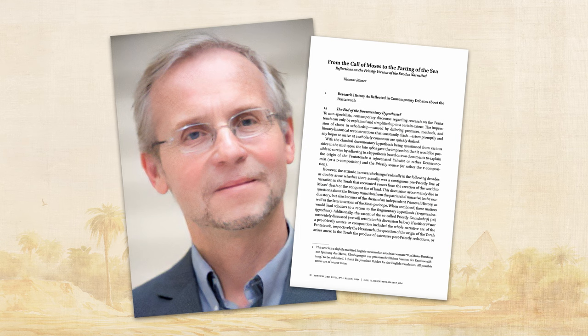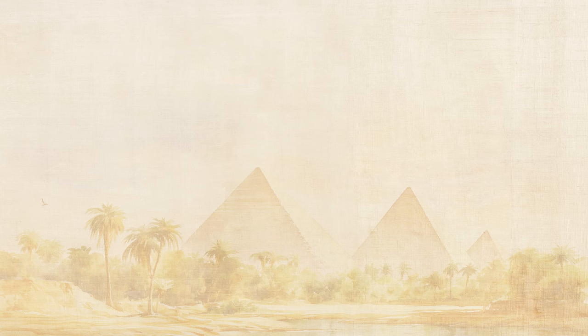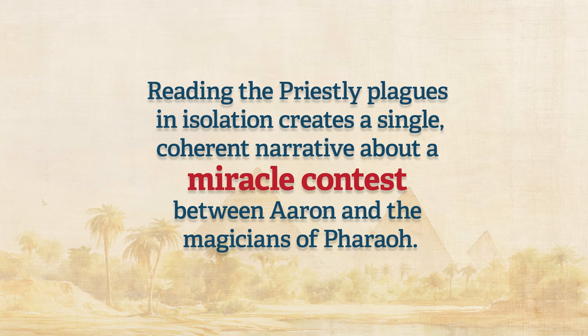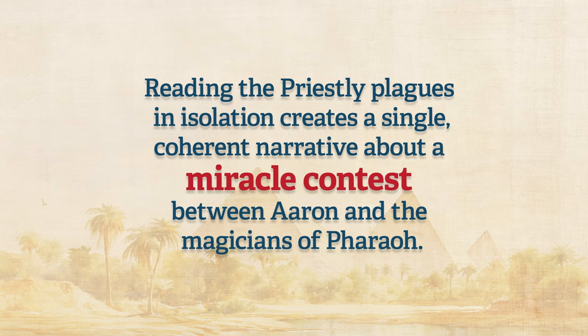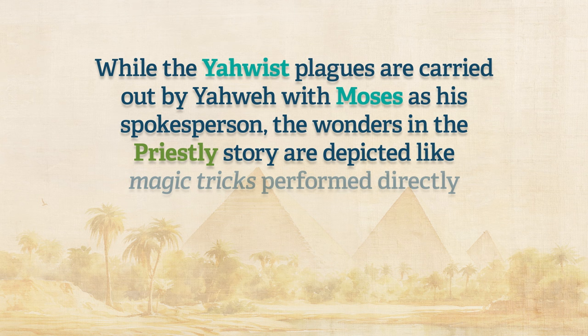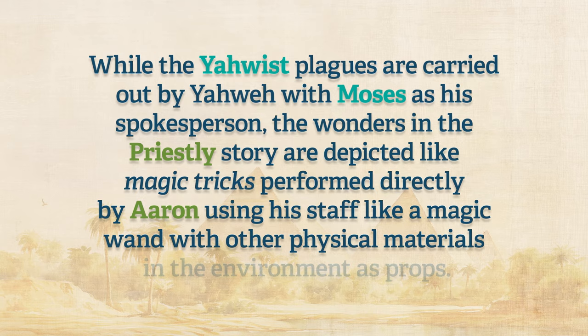Old Testament scholar Thomas Raymer, among others, has shown that the Priestly version of the plagues was probably written as a stand-alone story. Reading the Priestly plagues in isolation creates a single, coherent narrative about a miracle contest between Aaron and the magicians of Pharaoh. In fact, reading just the Priestly writer's story on its own, one is struck by the hyperbolic and frankly zany nature of the tale. While the Yahwist plagues are carried out by Yahweh with Moses as his spokesperson, the wonders in the Priestly story are depicted like magic tricks performed directly by Aaron using his staff like a magic wand, with other physical materials in the environment as props.